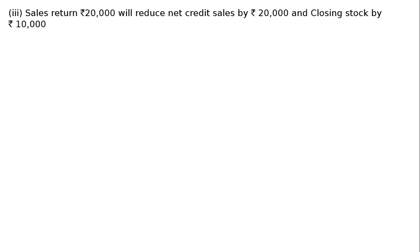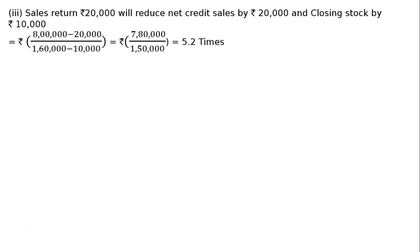Part C: Sales return Rs 20,000 will reduce net credit sales by Rs 20,000 and closing debtors by Rs 10,000. The new ratio is Rs 8 lakhs minus Rs 20,000, divided by Rs 1 lakh 60,000 minus Rs 10,000, that is Rs 7 lakhs 80,000 upon Rs 1 lakh 50,000, which equals 5.2 times. This is more than the original ratio of 5 times, so it will increase the ratio.